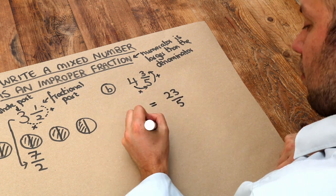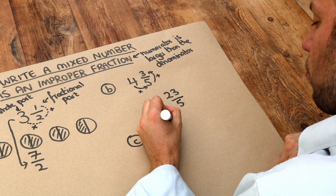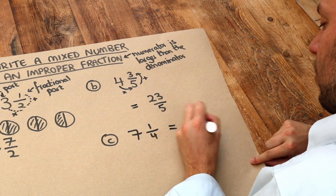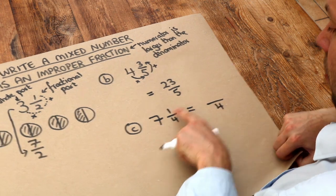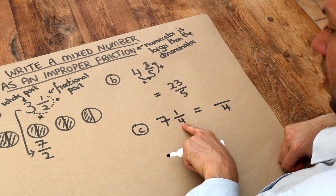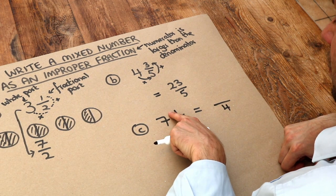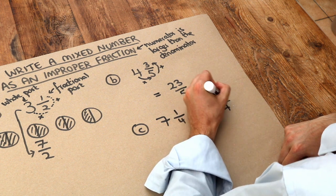And just one more example. If we had seven and a quarter, then we keep the denominator as it is, the four at the bottom. But to get the numerator we do seven times four. Seven times four is twenty-eight. Plus the one is twenty-nine.